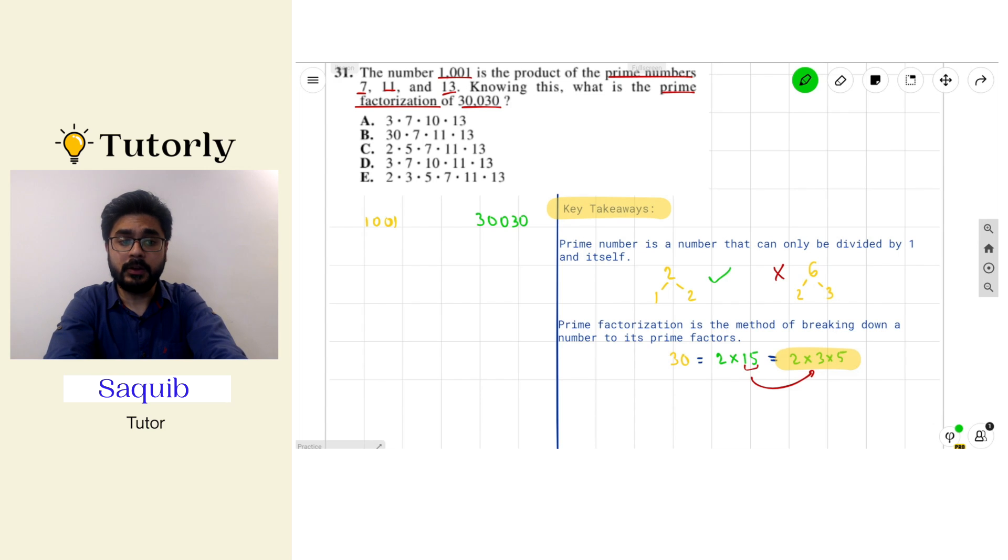Well, if I look closely, 1001 and 30,030 kind of look similar. So if I go ahead and multiply 1001 by 30, I get 30,030. And I know from the question that 1001 is the product of the prime numbers 7, 11, and 13.